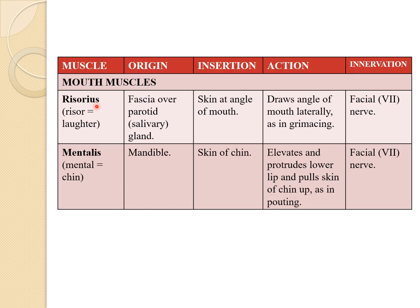The next muscle is the risorius. 'Risor' means laughter. Its origin is the fascia over the parotid gland, and its insertion is at the skin at the angle of the mouth. The action of the risorius is to draw the angle of the mouth laterally, as in a grimace. It is also innervated by the facial nerve.